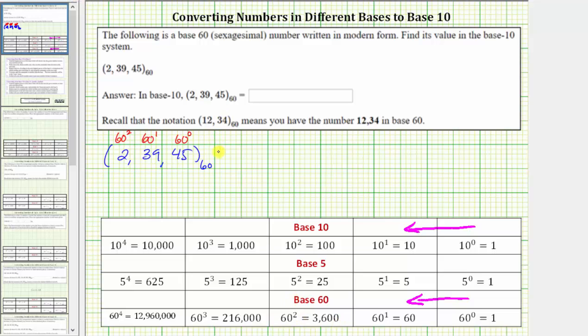Which means in base 10, this equals 2 times 60^2 plus 39 times 60^1 plus 45 times 60^0.